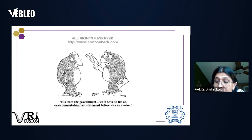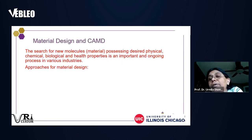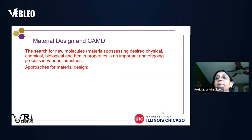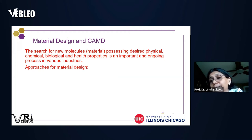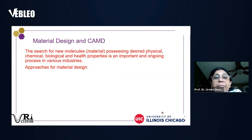What I want to emphasize is that material design — or computer-aided molecular design — is very important in many industries and areas, especially when you want to find materials with desired properties, whether physical, chemical, biological, or health properties for specific applications.